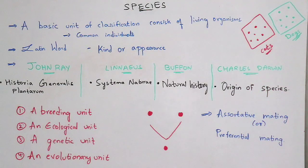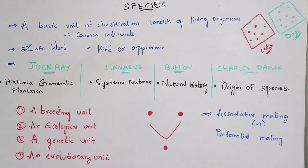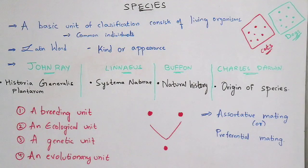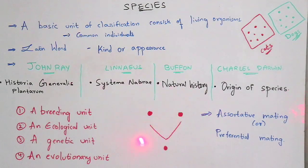What is meant by assortative mating? This is one of the important questions which will be asked in your entrance examinations. Preferential mating or assortative mating is a pattern of sexual selection in which individuals with similar phenotypes undergo copulation with another individual of the same species, and mainly form a common fertile individual. The common individual which is formed will also belong to the same species.